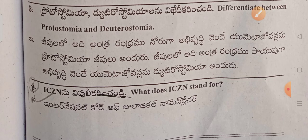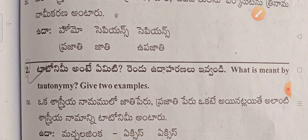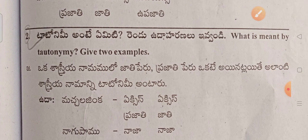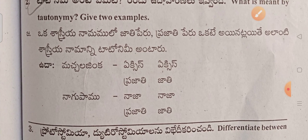ICZ is the International Code of Zoological Nomenclature. The first question is Tautonymy. Two of the characters share the name — Tautonymy. This is an example where the genus name and species name are the same.